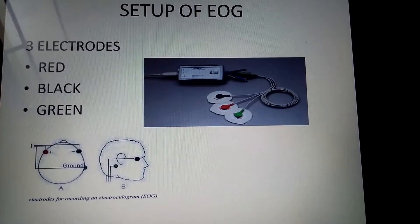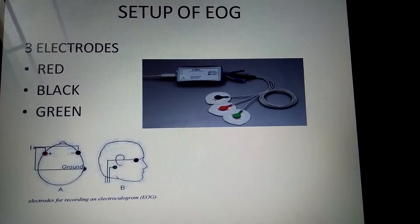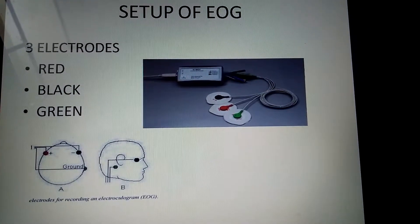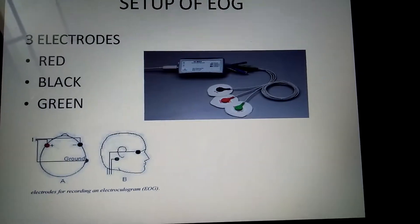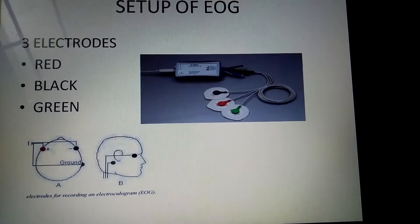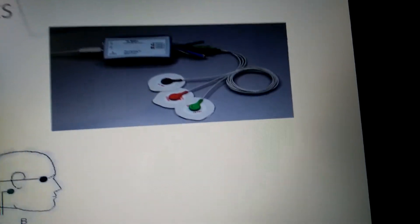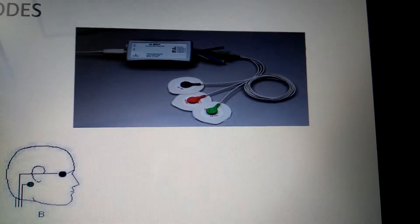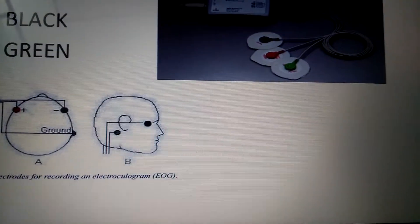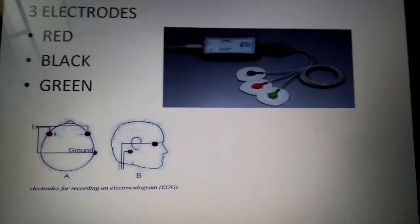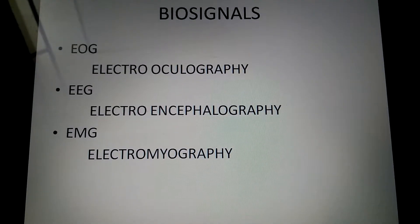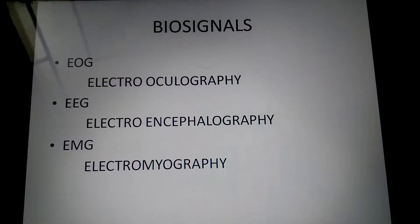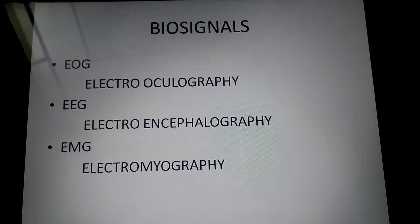The setup of EOG will have 3 electrodes. Red positive, which is kept on the left end of the left eye. Black negative, which is kept on the right end of the right eye. And neutral green, which can be put below the ears, on the neck, or on the forehead. The electrodes measure the EOG, EEG, and EMG biosignals.